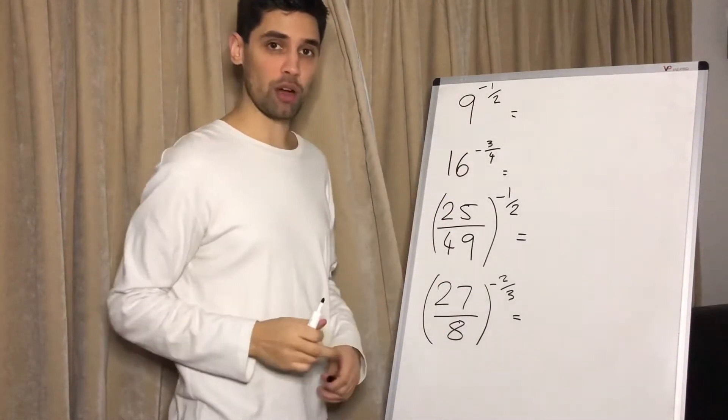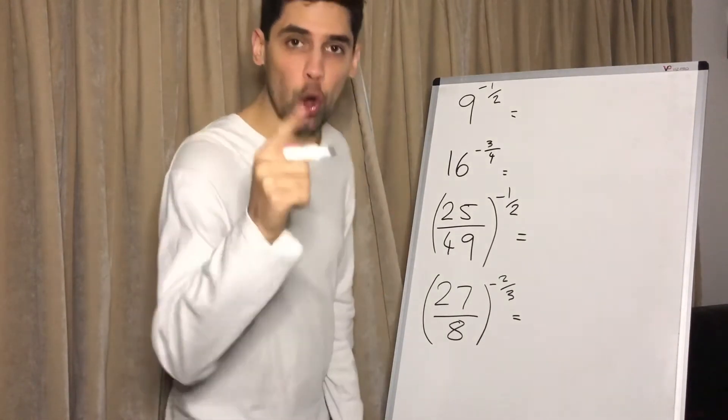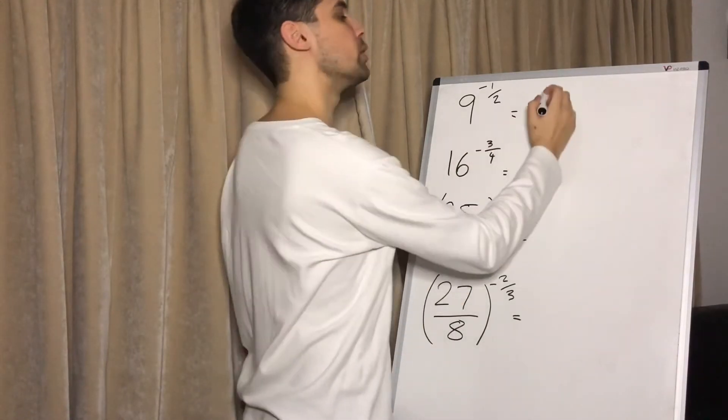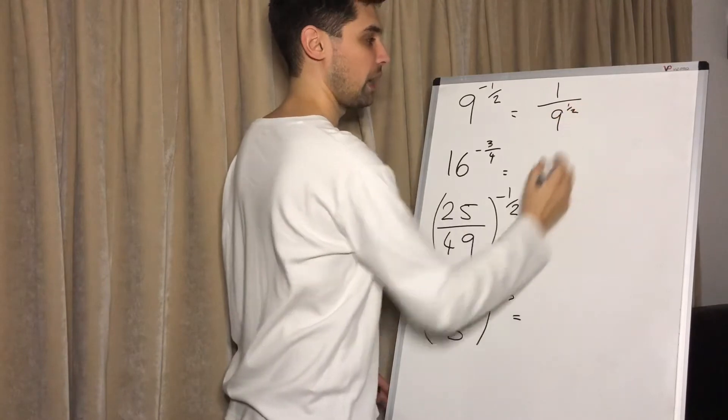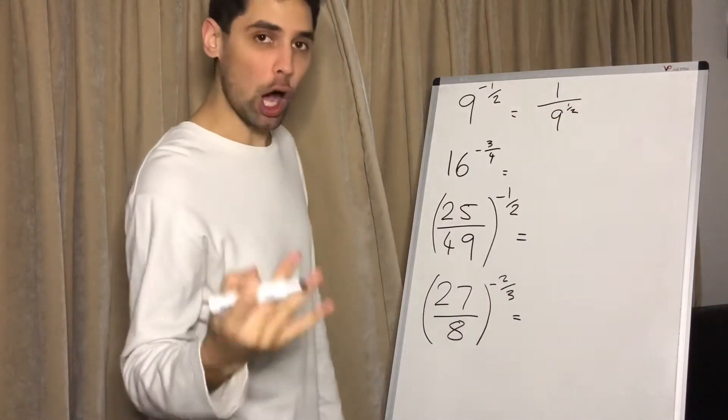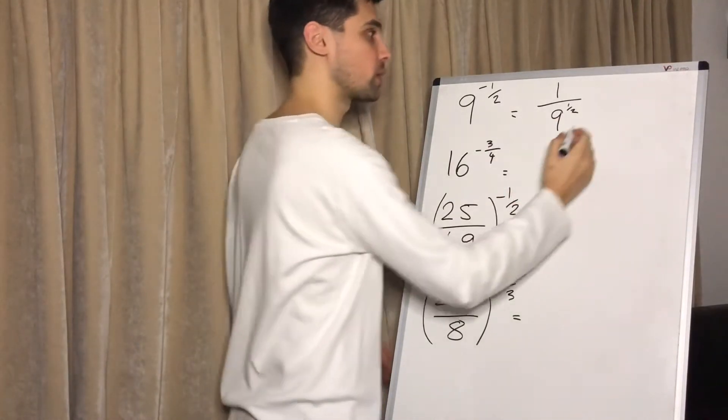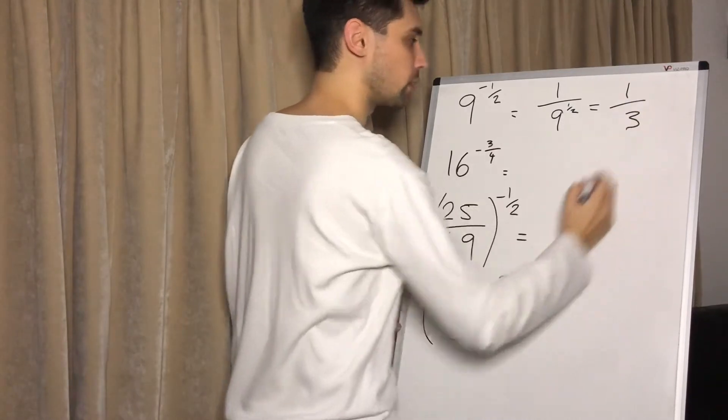Nine to the minus half. We'll just deal with the negative power first. So remember, a negative power does not mean the number becomes negative. It means we make one over nine to the half. What does the power of half do? It means a square root. Remember flower power? The number on the bottom is the root. So what is the square root of nine? One over three.